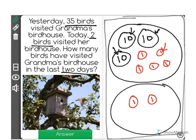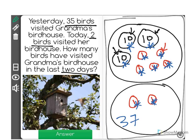So I could see we have 10, 20, 30, 31, 32, 33, 34, 35, 36, 37. A total of 37 birds visited Grandma's birdhouse in the past two days.